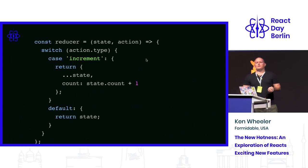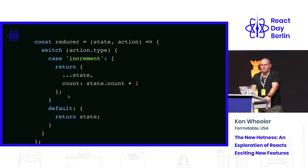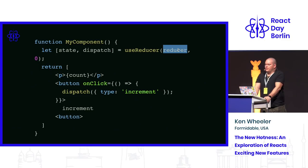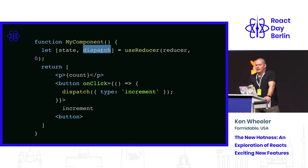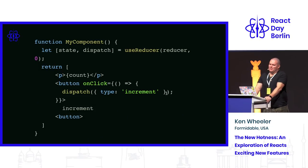useState is actually a convenience wrapper around another hook called useReducer. If you've used Redux, you'll recognize the reducer pattern. With useReducer, the first argument is a Redux-style reducer function and the second argument is initial state. The setter is really a dispatch — you call it with dispatch type increment, for example. It's essentially built-in Redux. setState is just a wrapper around that.